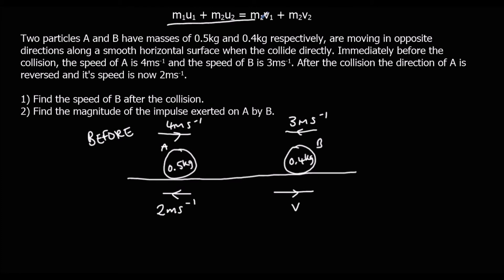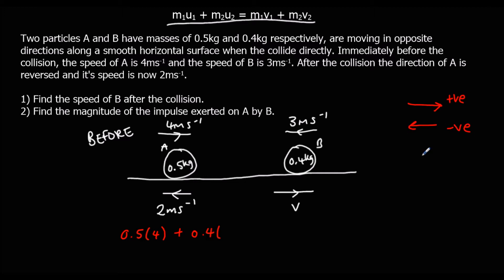We're going to use our formula. M1U1 is 0.5 times 4, plus M2U2, which is 0.4 times negative 3 — because B is moving to the left and we say the right is positive. That equals M1V1, which is 0.5 times negative 2, plus M2V2, which is 0.4V.